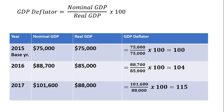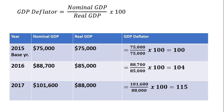Looking at the 2015 GDP deflator and the 2016 deflator, the higher number indicates that on average prices rose in this economy over 2016. For 2017, our final year of data, we calculate the GDP deflator and get a value of 115. The GDP deflator is again higher than the previous year, so on average prices rose.